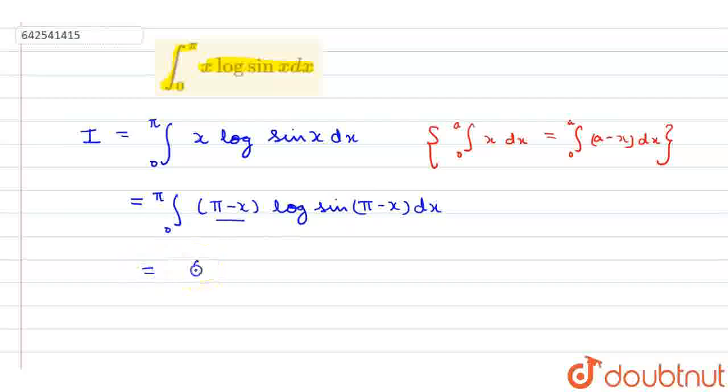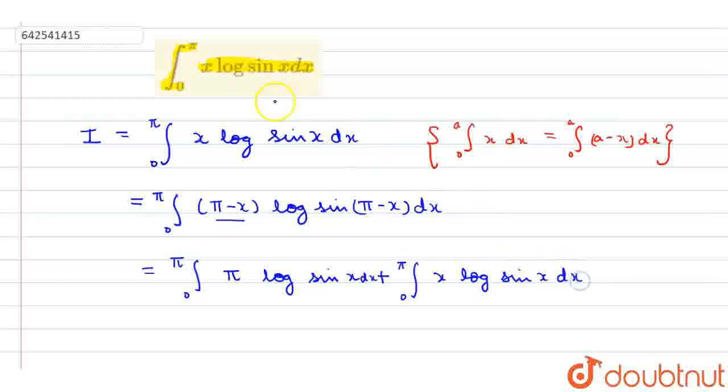Now opening this bracket, it will be integral 0 to pi of pi log sin(pi minus x) dx minus x log sin(pi minus x) dx. Since sin(pi minus x) is sin x, the second term becomes integral 0 to pi of x log sin x dx.